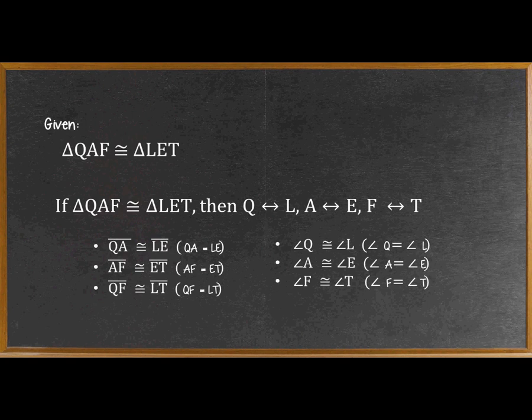Another example: triangle QAF is congruent to triangle LET. We're not given illustrations here, but we know that to name the corresponding sides and angles by their arrangement is necessary. If triangle QAF is congruent to triangle LET, then Q corresponds to L, A corresponds to E, and F corresponds to T.